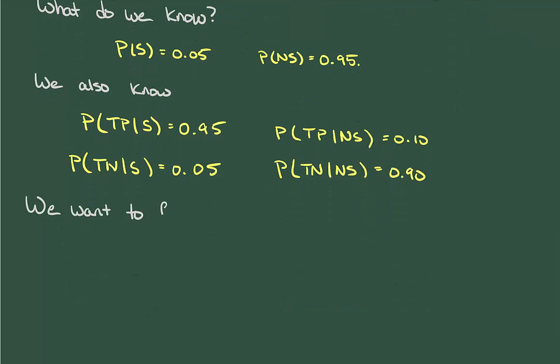Now, given that Jesper tests positive, we want to know the probability that he's actually a skooma user. We want to know P(S|TP). Applying Bayes' theorem gives us the following equation.